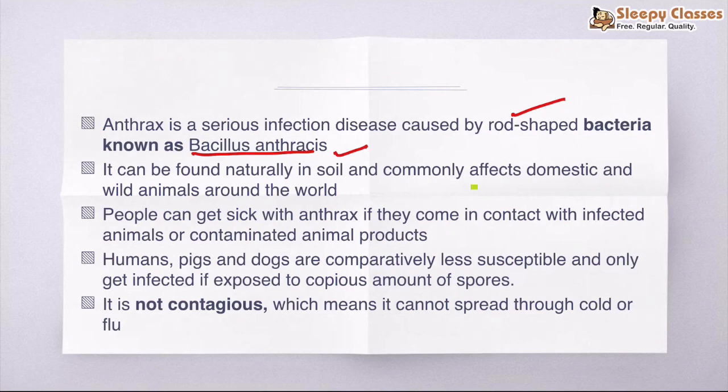And it can commonly affect domestic and wild animals around the world, like horses, sheep. So the first statement was partially true that it can affect them, but it is not a viral disease, it's bacterial. And people, even humans, can get sick with anthrax if they come in contact with infected animals or contaminated animal products.